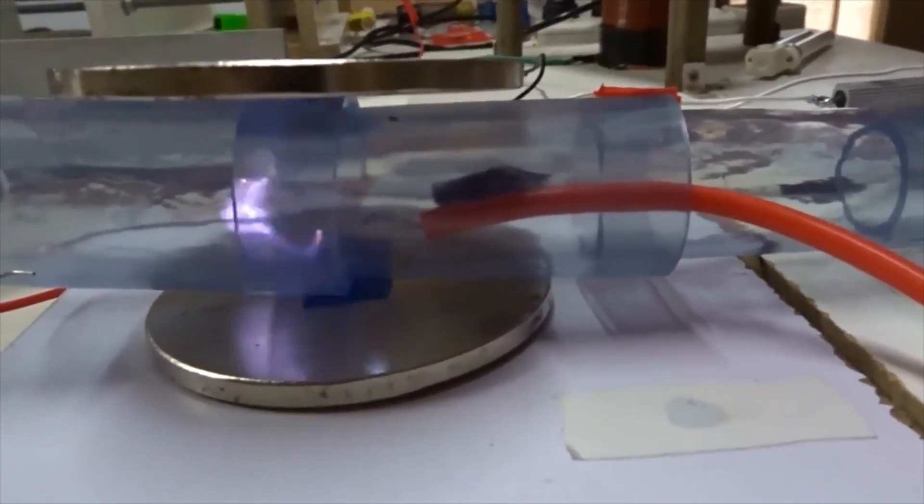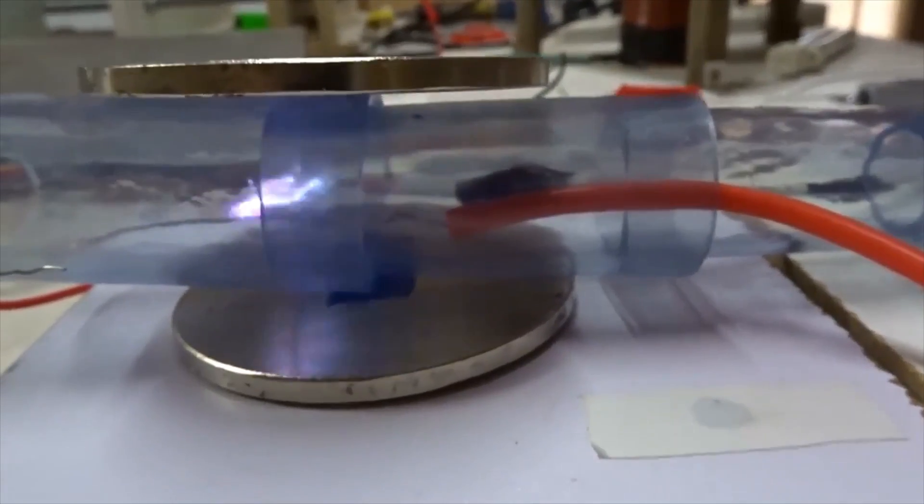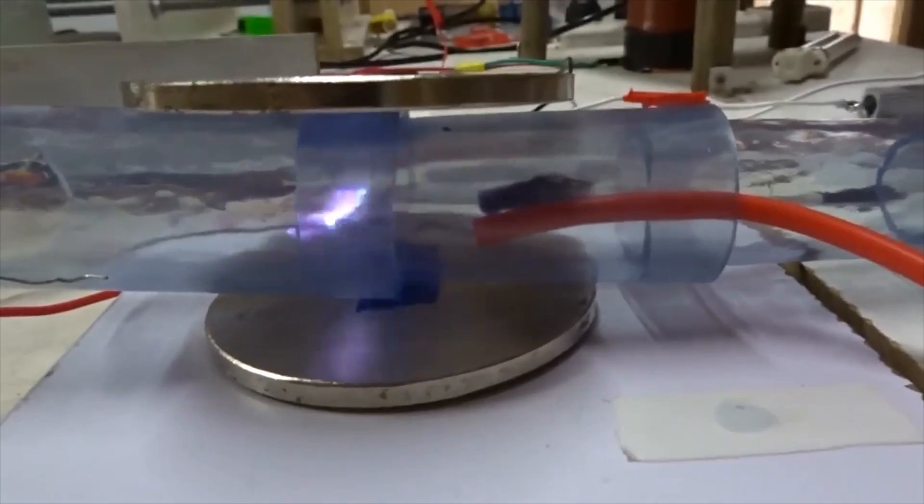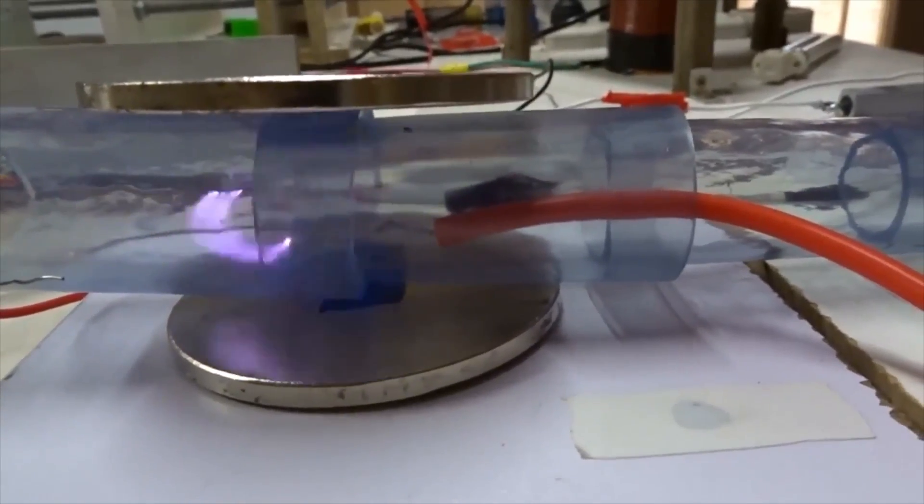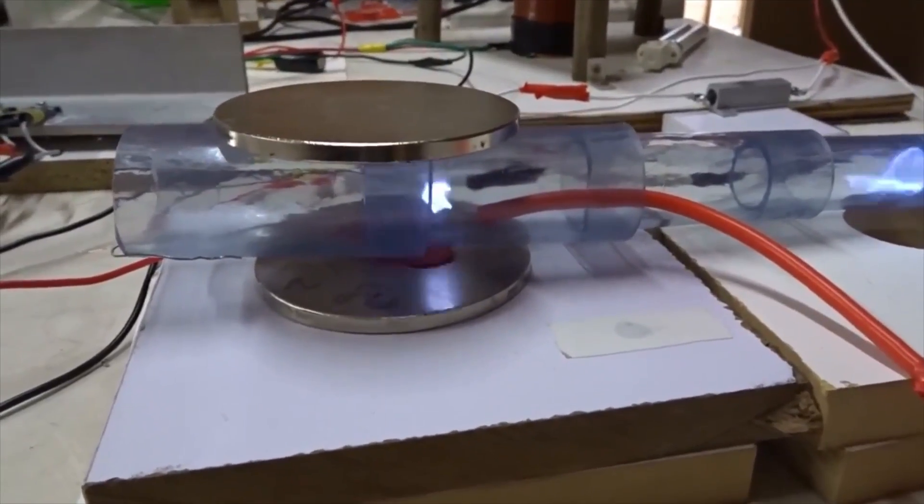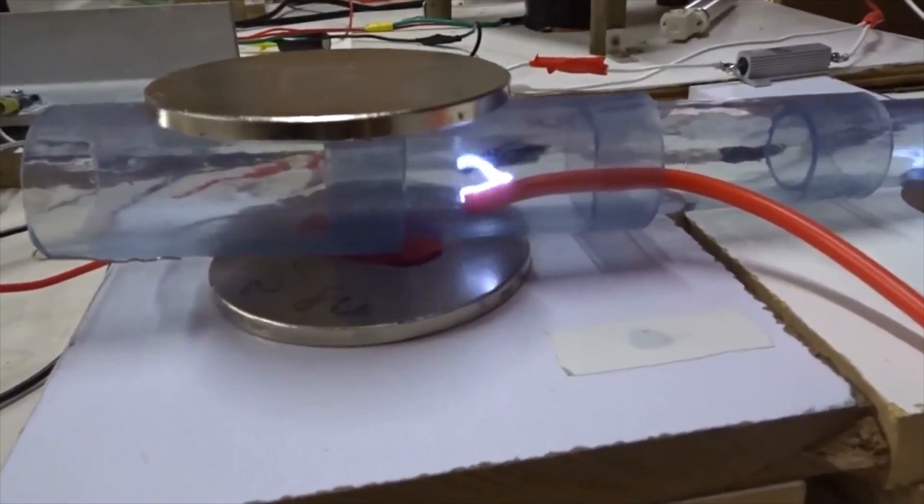Now we see it's shooting out to the left. When we flip the magnets the other way, now we see the Jacob's Ladder is going to the right.